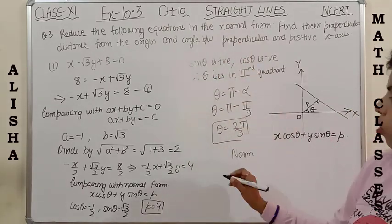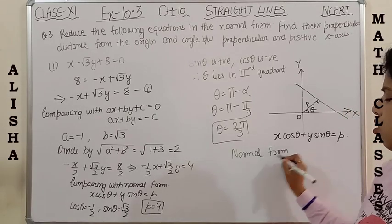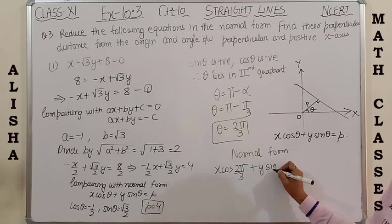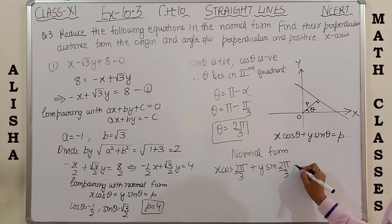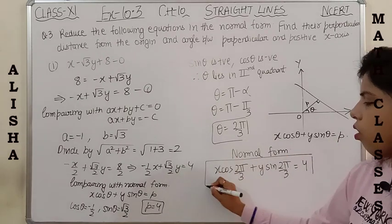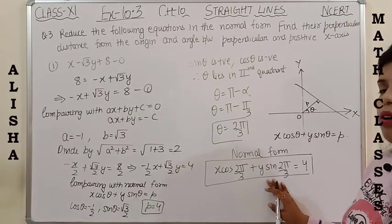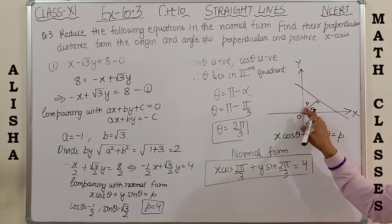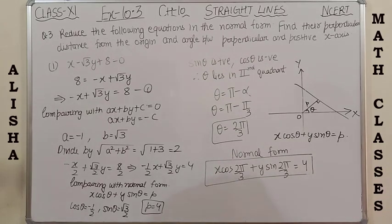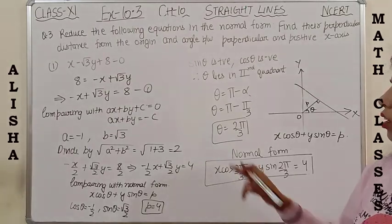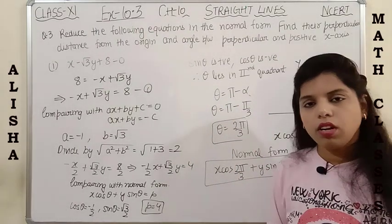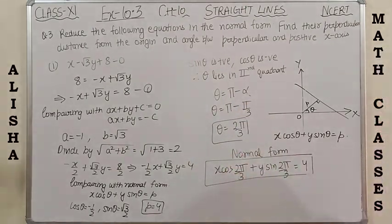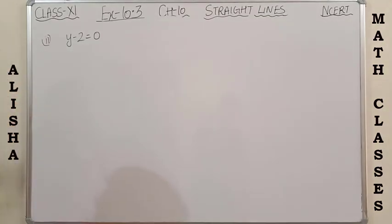The normal form is x·cos(2π/3) + y·sin(2π/3) = 4. So the perpendicular distance from the origin is 4 units and the angle of the perpendicular with the positive x-axis is 2π/3. Remember: when an angle lies in the second quadrant, θ = π - α.